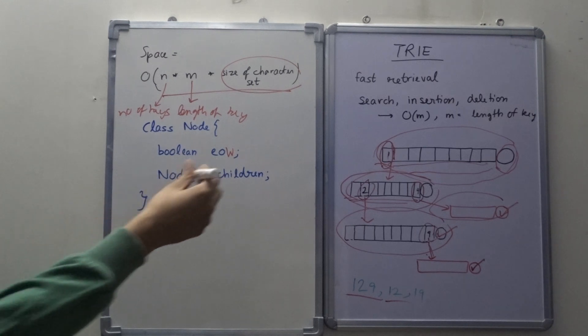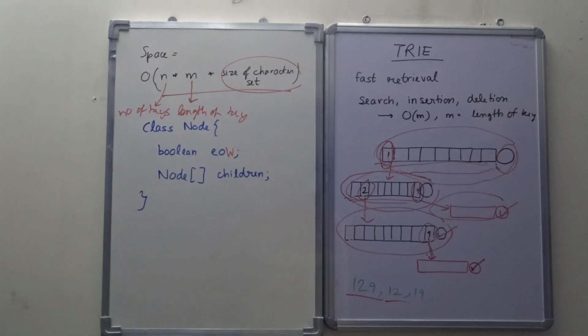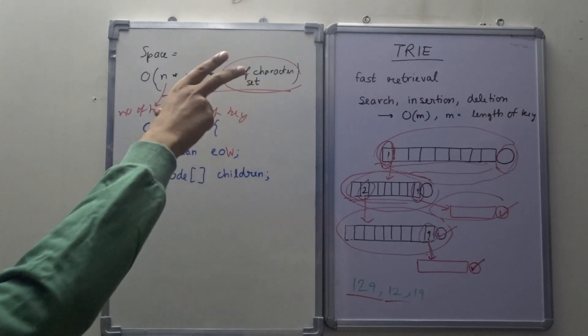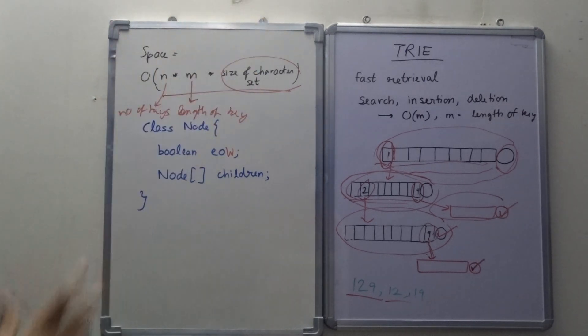So in this case, we took the size of character set as 9. But in general, it can be anything, let's say I am taking the ASCII character set. So it can be up till 255 also. So as you can see, this is taking a lot of space, M into size of character set.